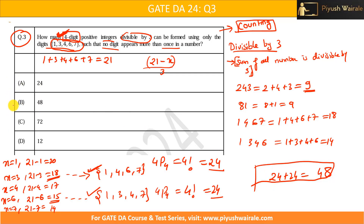Using the first combination we get 24 numbers, and using the second combination we also get 24 numbers. The total is 24 plus 24 equals 48. So the correct answer is option B, which is 48. This is a one-mark question. The key is knowing the divisibility condition for three, then figuring out which four-digit subsets have a sum divisible by three.